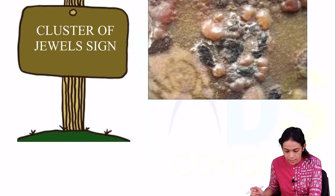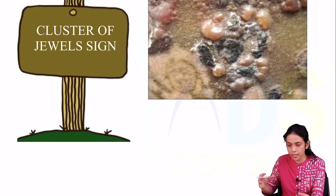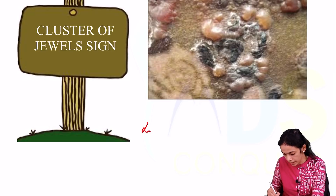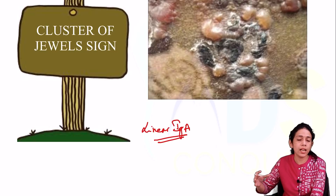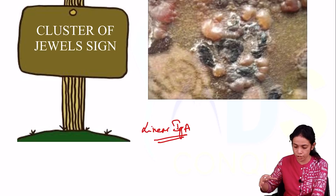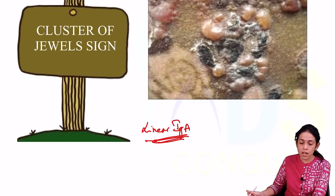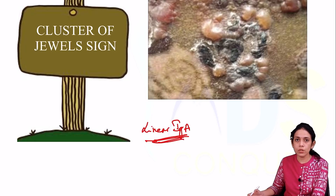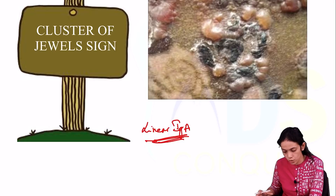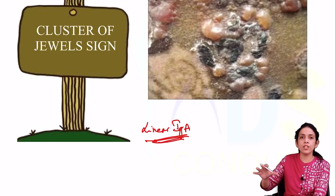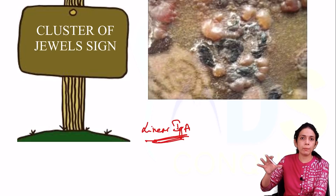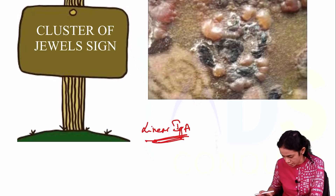Next is the Cluster of Jewel sign. A cluster of bullae is seen arranged in a herpetiform fashion. This is seen with linear IgA disease, an autoimmune condition also called linear IgA dermatosis.